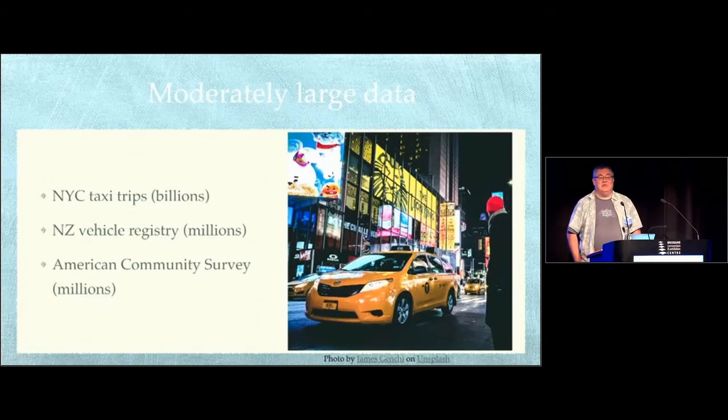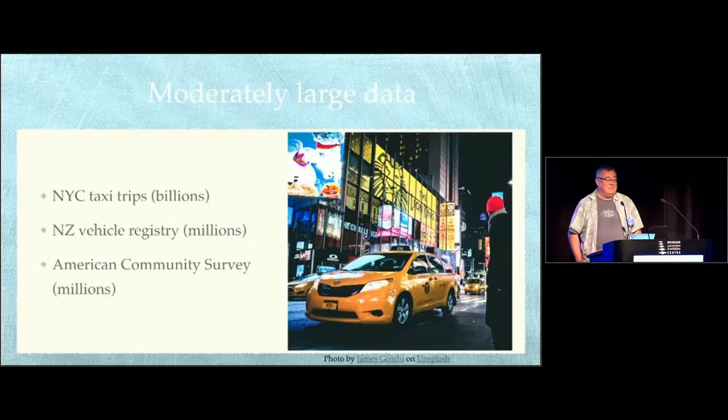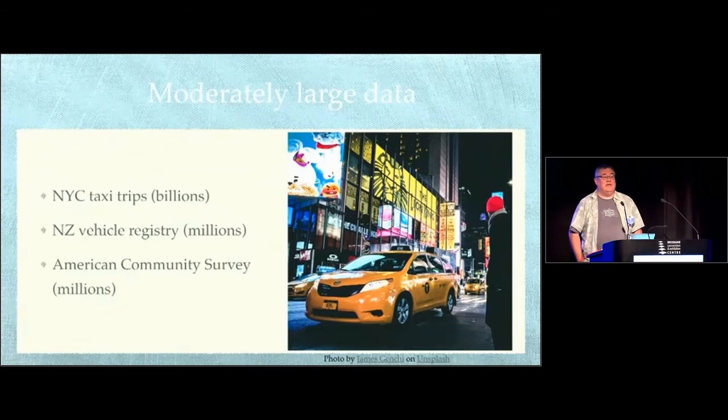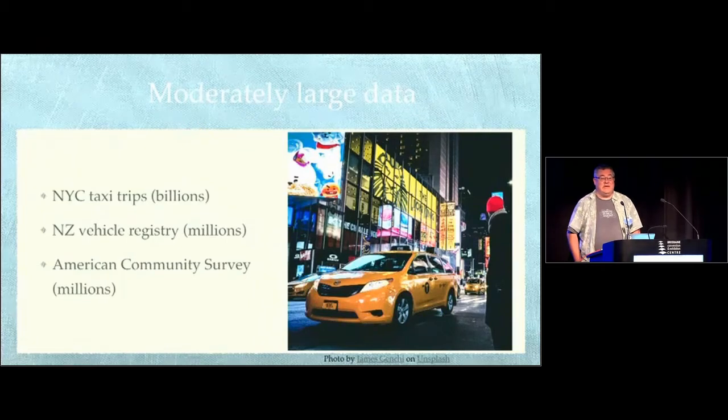Examples: there's the famous New York taxi trips dataset that got foired in New York and has been used for all sorts of interesting analyses. I'll be showing you some data from the New Zealand Vehicle Registry. More seriously, the American Community Survey samples 2% of the American population every year and that adds up fairly quickly.